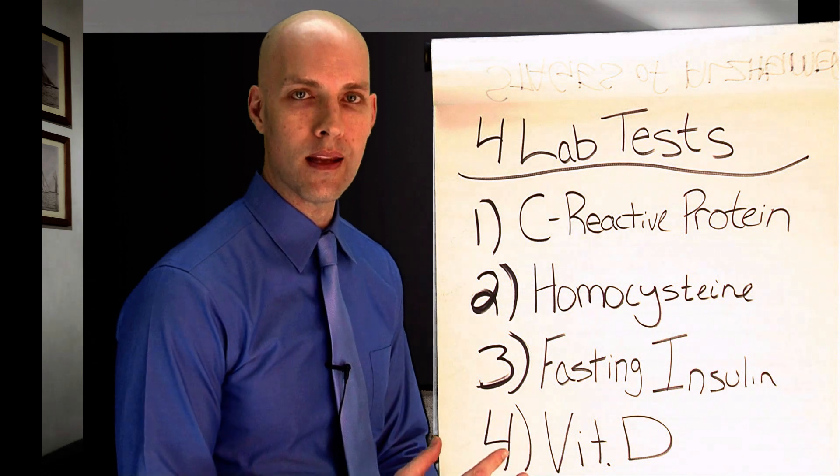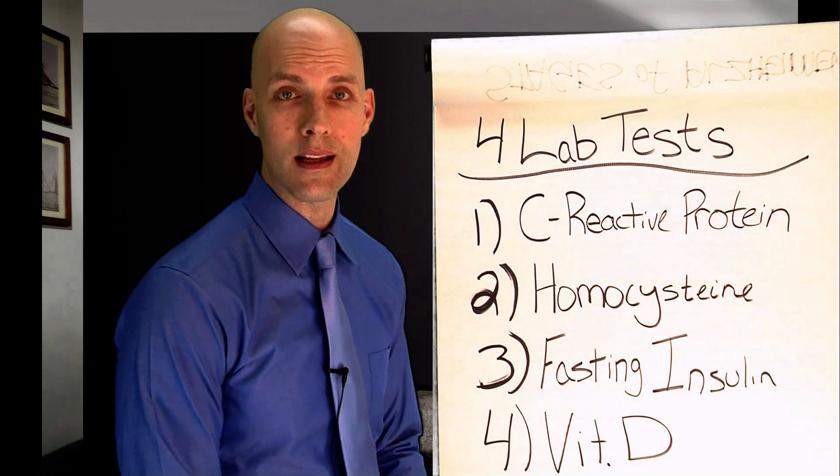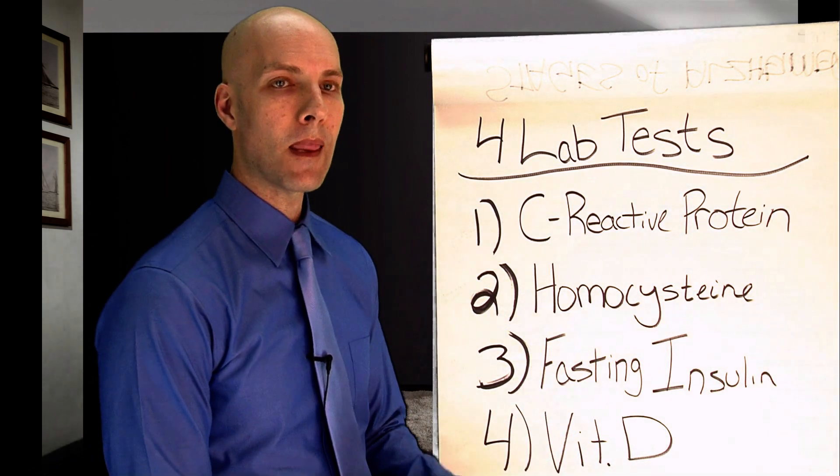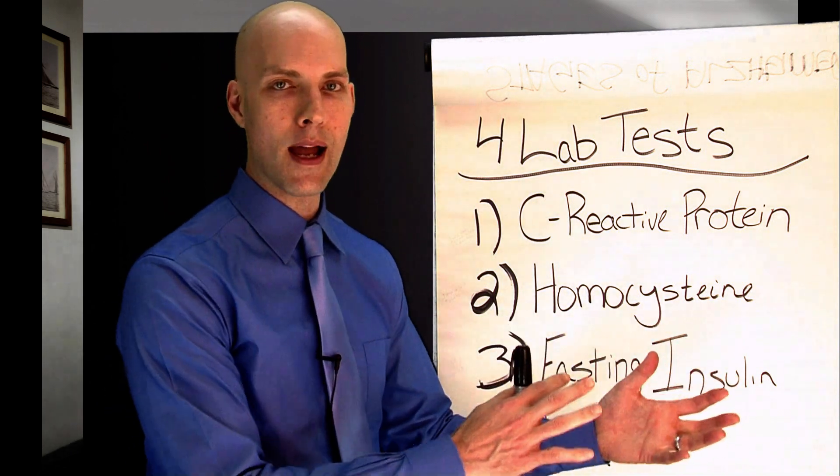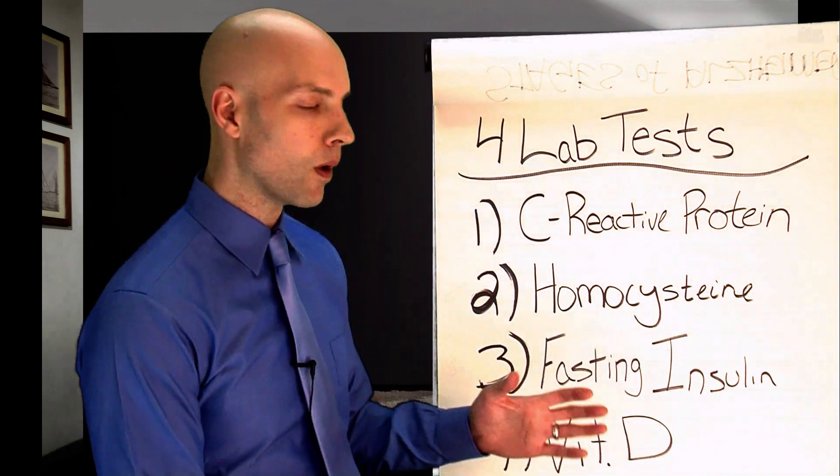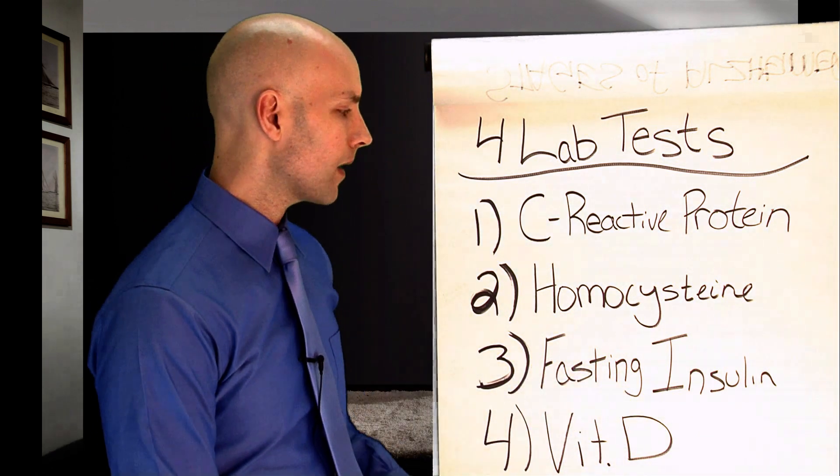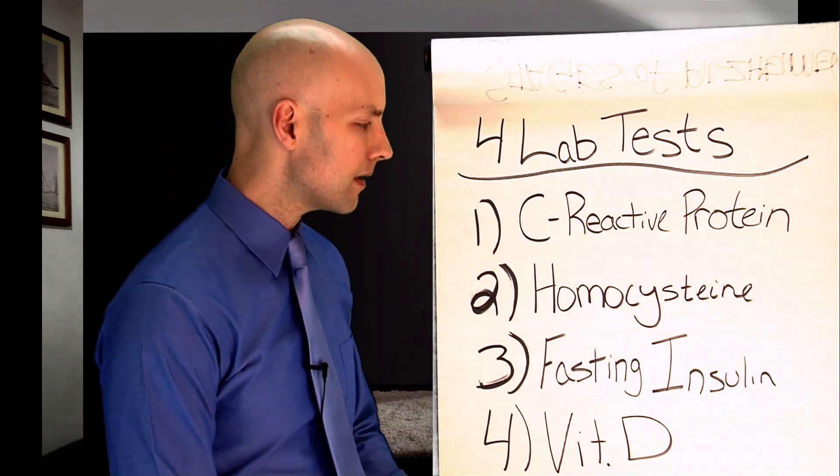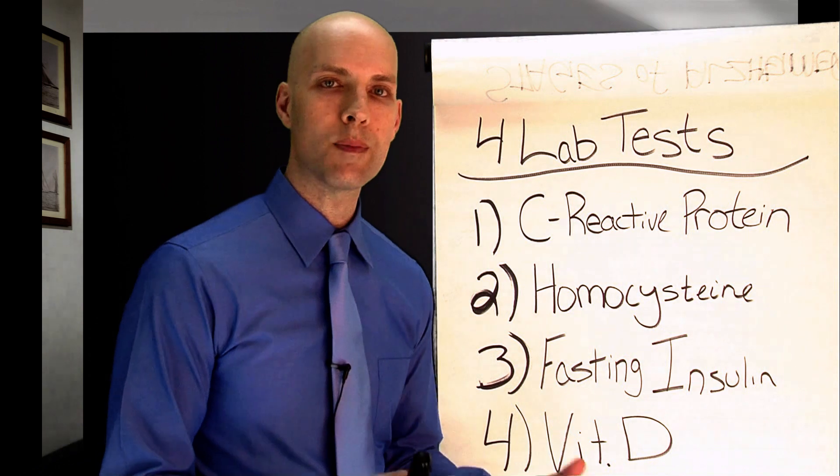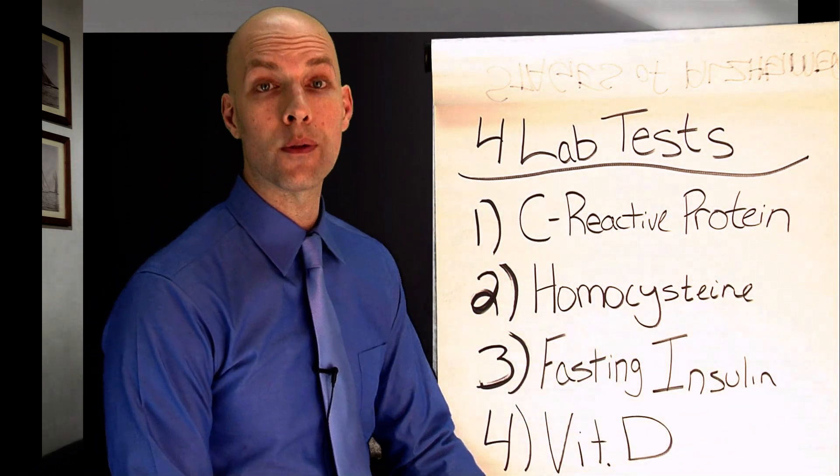We see a lot of patients come in that have their glucose checked, fasting glucose, and their hemoglobin A1C. And those are two common markers when we're looking at sugar. But we want to catch it and be proactive before we get into that diabetic range. And one way we can do that is by checking fasting insulin and that'll tell us and give us an indication of insulin resistance in the body. So normal is below 5, but ideally we want this marker to be below 3.